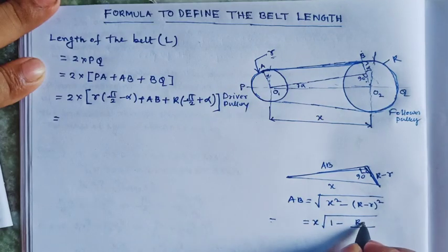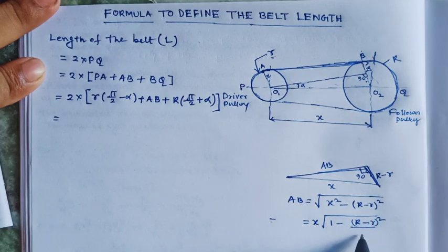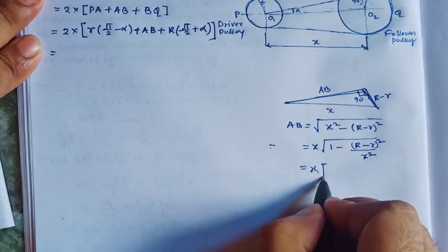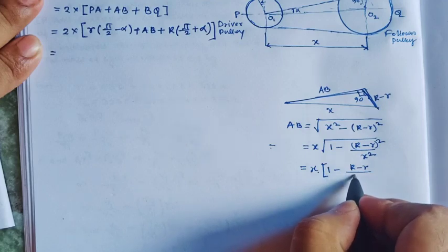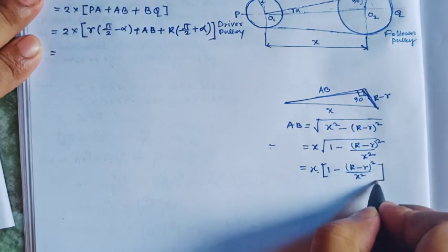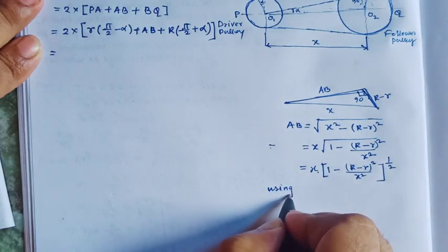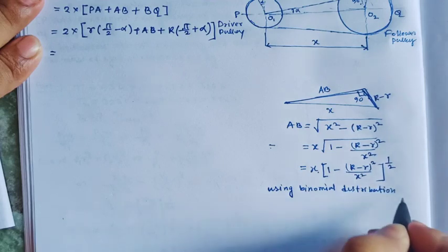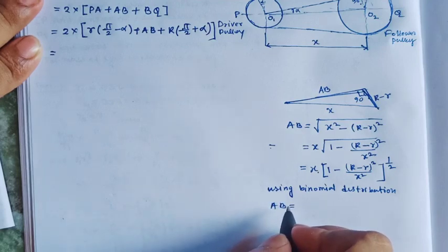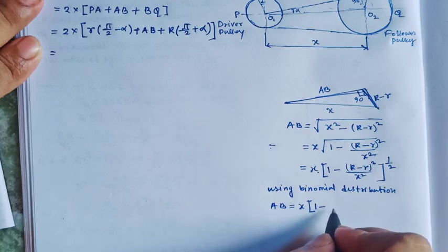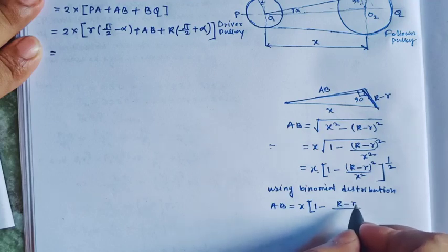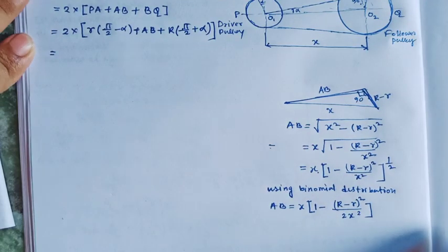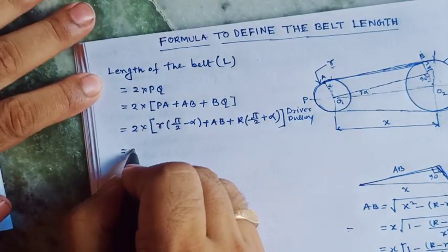So AB = √[X² − (R − r)²], which equals X × √[1 − ((R − r)/X)²], to the power 1/2. Using the binomial distribution, we can write AB ≈ X × [1 − (R − r)² / (2X²)].